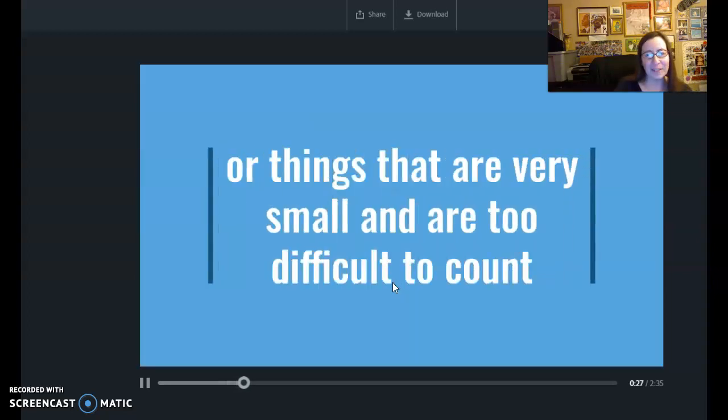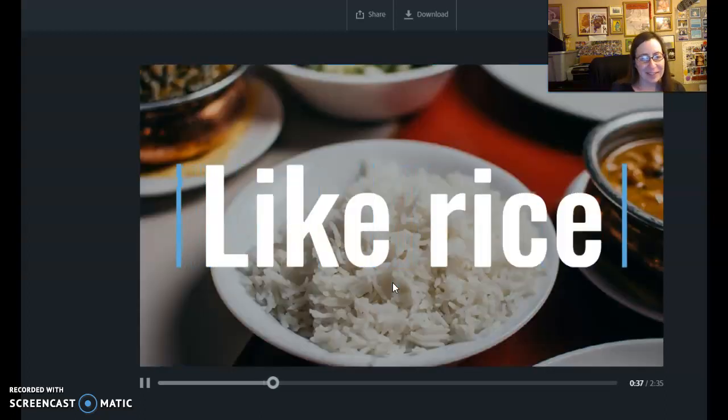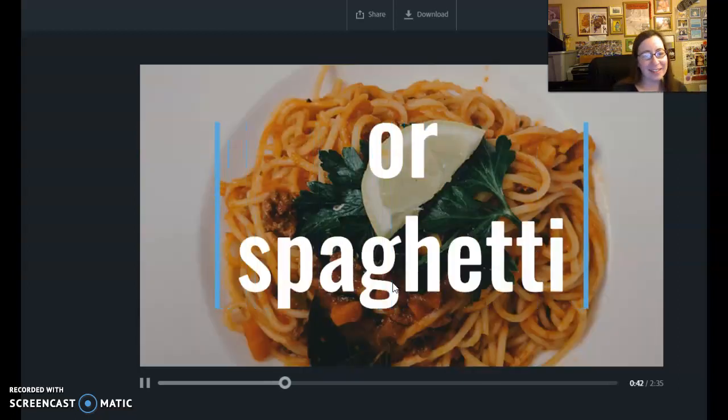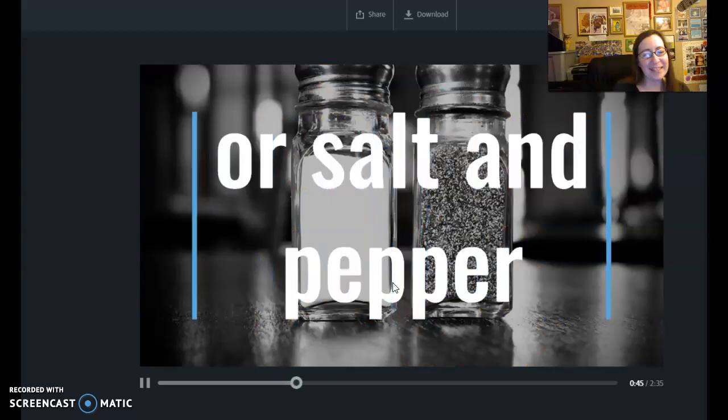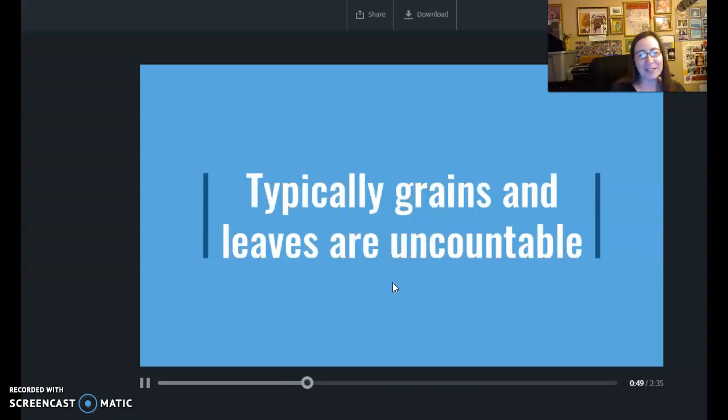You can't say two waters, or things that are very small and are too difficult to count, like rice. You can't say I want two rice, or spaghetti. You can't say I want three spaghettis, or salt and pepper. I want 500 salts. Typically grains and leaves are uncountable.